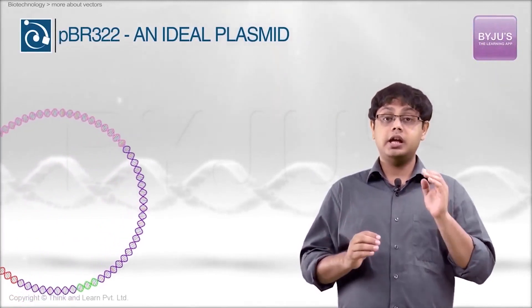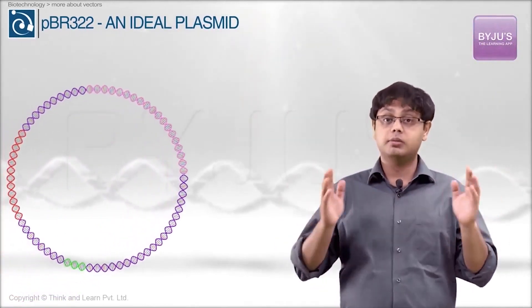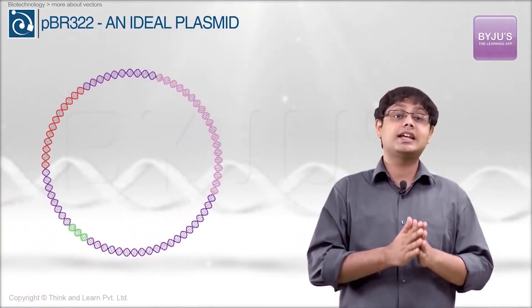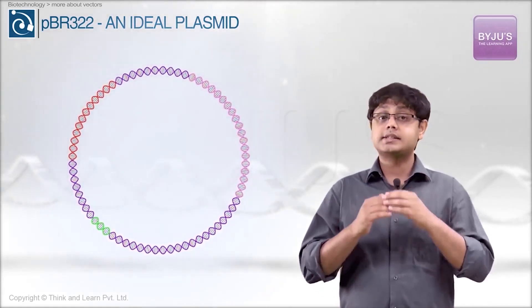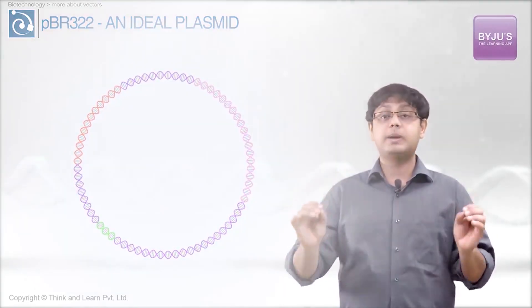Now, let's take a plasmid called PBR322 and study its characteristics. This was the most widely used, versatile, and easily manipulated vector. In fact, it is still considered an ideal plasmid vector.